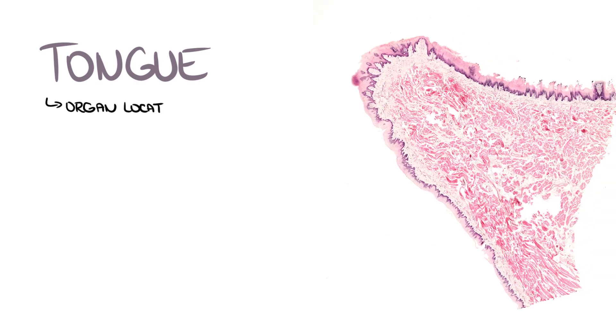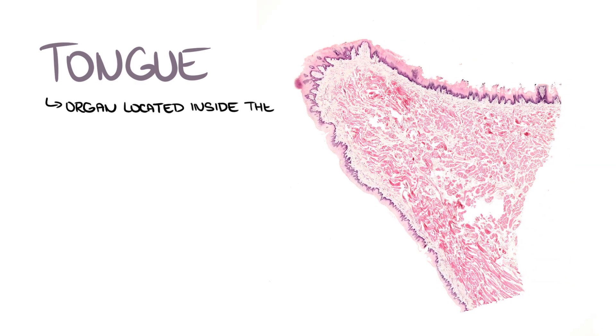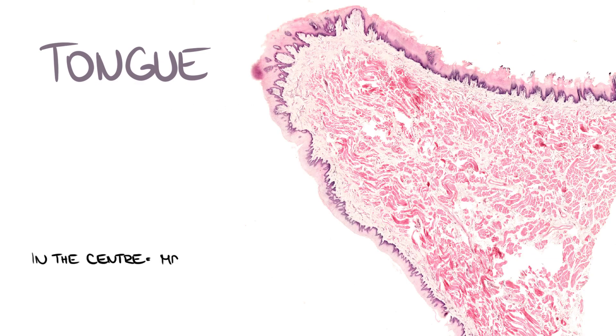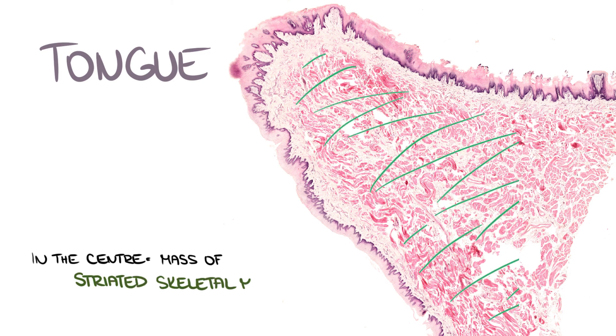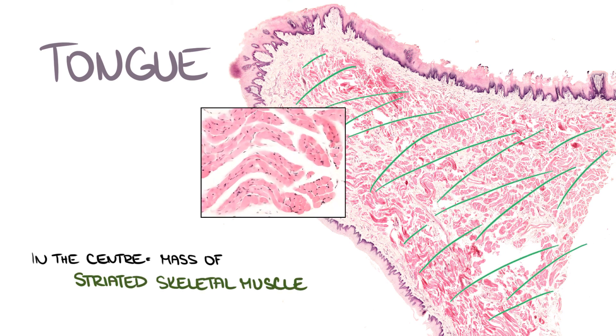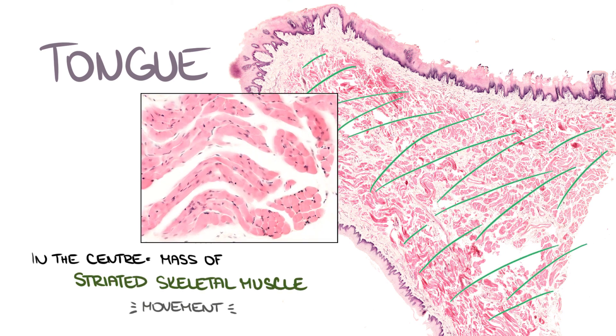The tongue is an organ located inside the oral cavity. In the center, there is a mass of striated skeletal muscle which provides movement of the tongue.